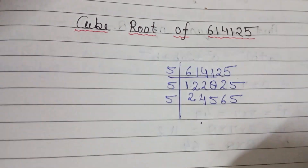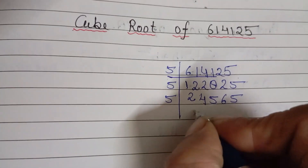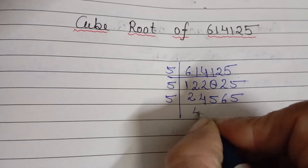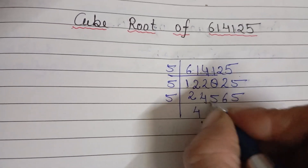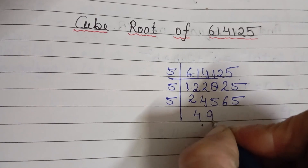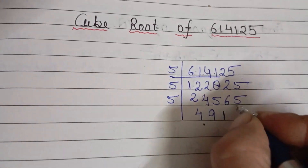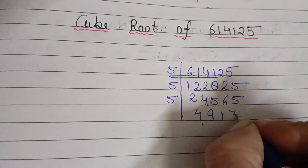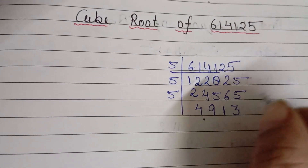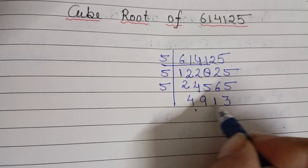Again it is divisible by 5. So 5 fours are 20; 5 nines are 45; 5 ones are 5; and then 5 threes are 15. So 4913 remains.